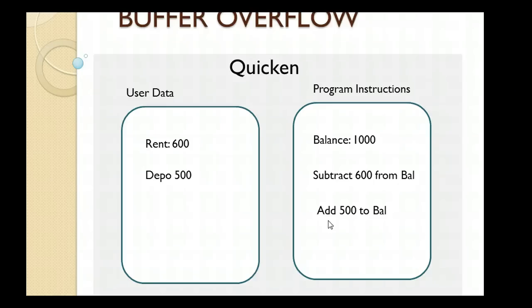Most people have used Quicken. Microsoft has a program called Microsoft Money. So let's think about either one of those programs. When the program loads into memory — that slightly darker rectangle represents the program in memory — there are actually two things in memory: one is the user data and the other is the program instructions.